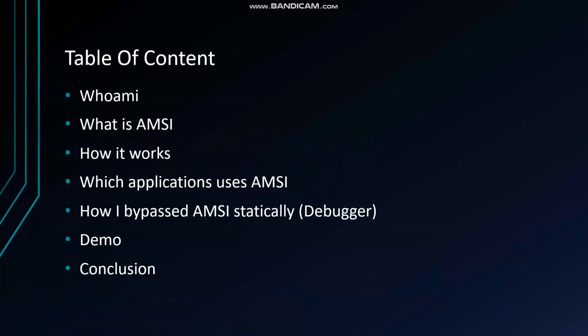In the table of contents: first, an introduction — what is AMSI; then the working of AMSI, how it works, which applications use AMSI, and how we can bypass it statically using a debugger. At the end I'll show a demo. I'll use a script to demonstrate the bypass — written in PowerShell — and also show the debugger-based method that works on Windows 10.